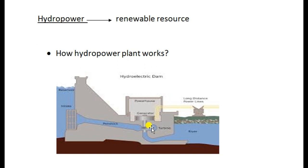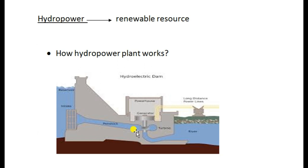Inside the channel there is a small turbine. The turbine spins and converts the kinetic energy of the flowing water into electricity, producing electrical energy from the power plant.